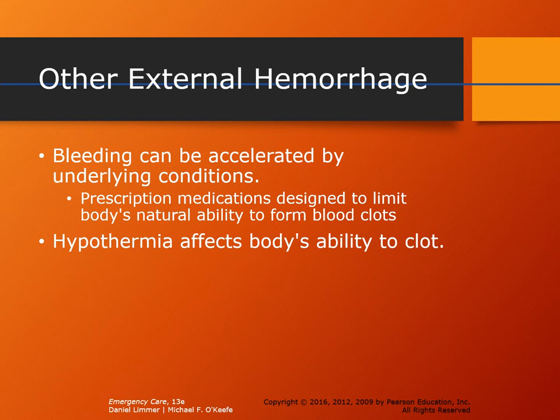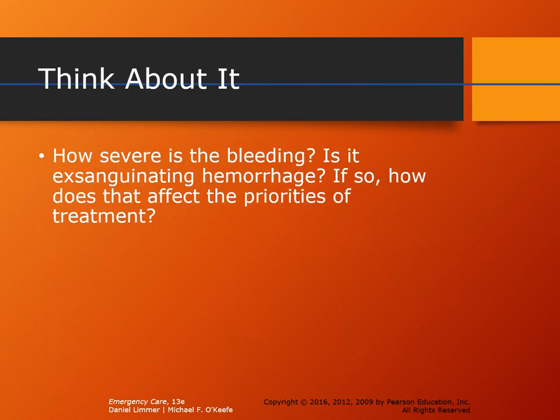Remember, external hemorrhage can be accelerated by underlying conditions — prescription medications such as blood thinners that limit our body's natural ability to form clots, as well as bleeding disorders such as sickle cell anemia and von Willebrand's disease. Also bear in mind that temperature affects clotting ability: the colder the patient, the more difficult it will be for them to form a clot. Before any treatment, we have to rapidly identify how severe the bleeding actually is.